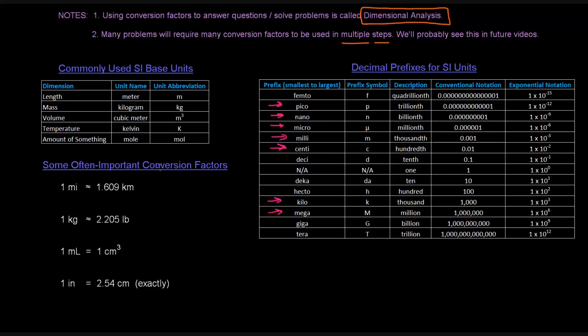So some often important conversion factors. I've written four here. There's definitely more than just these four that are important, but these are just some that came to mind. When you're converting from miles to kilometers, it connects the standard English system to the metric system. I've written a curvy equal sign for this one and for the one kilogram equaling 2.205 pounds. These are estimates. They're not exact values.